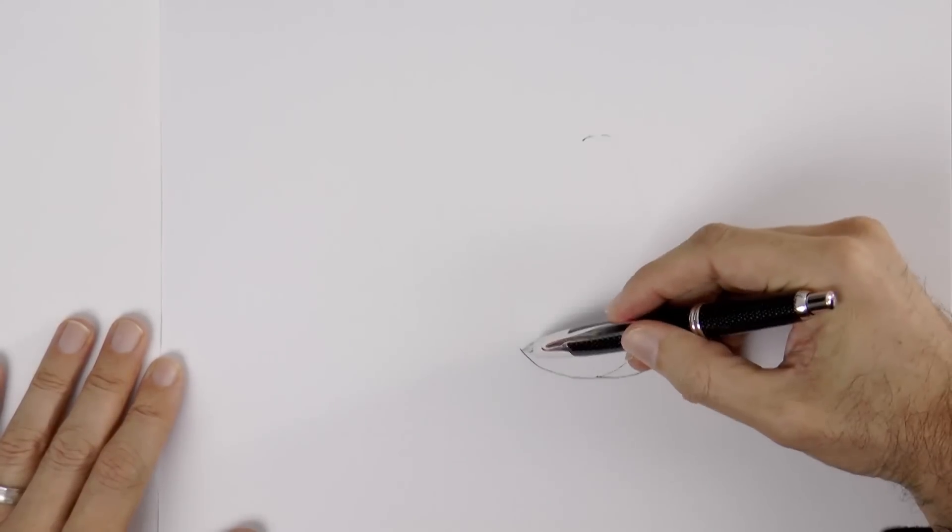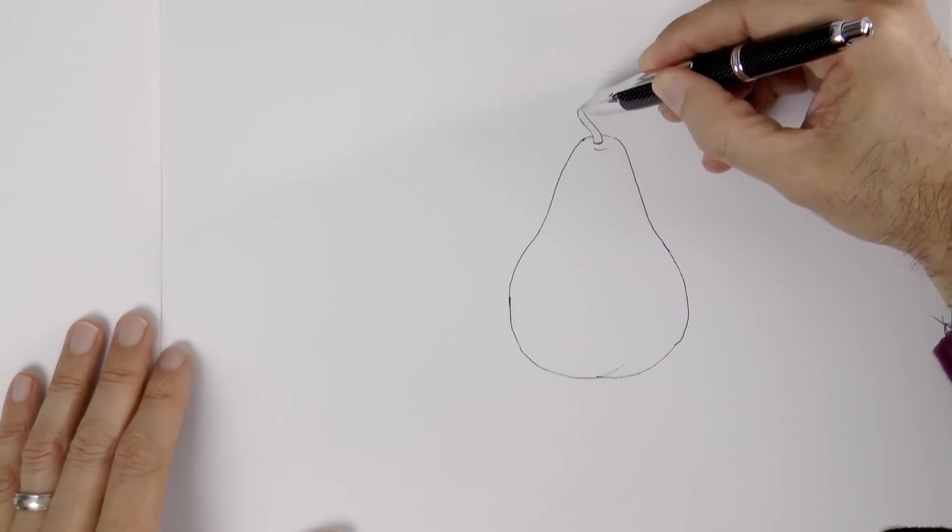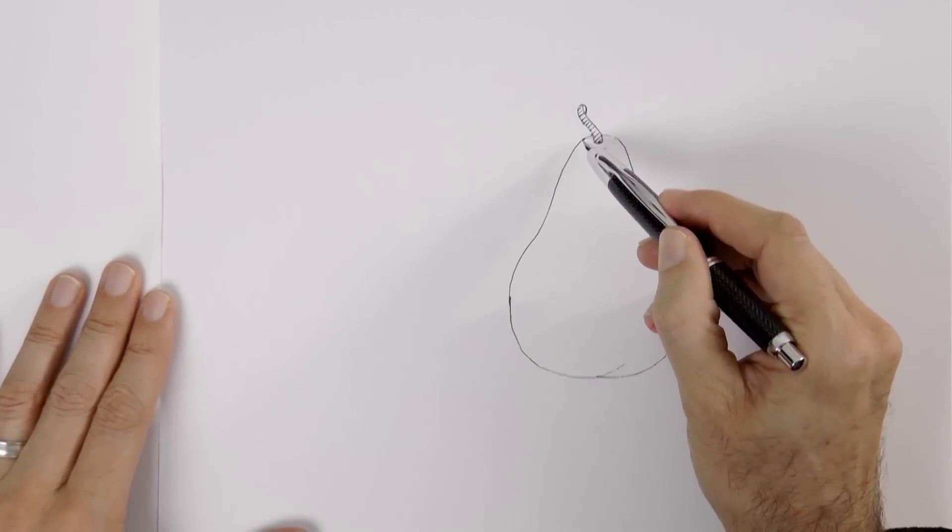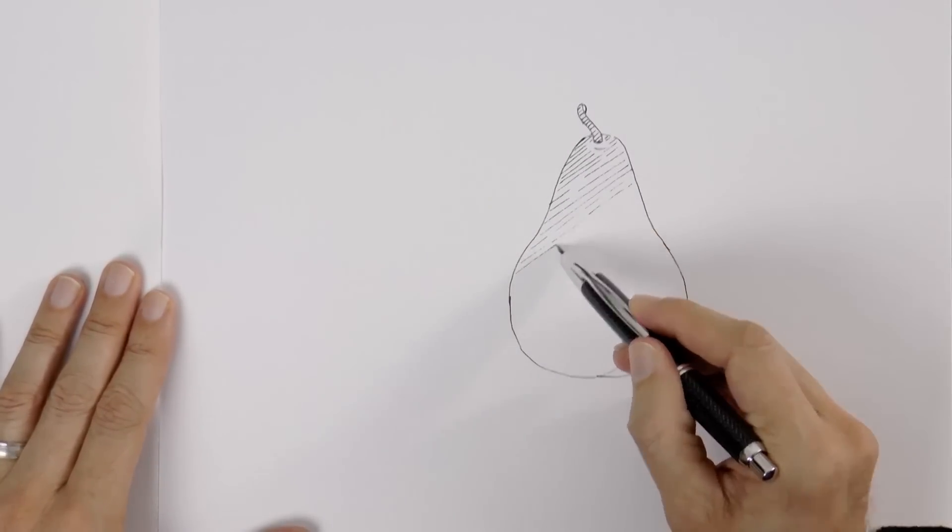I will do three sketches of pears and each I will shade it with a different technique. The first one will be the most classic and the most organized, which is with hatching and cross hatching with parallel lines.